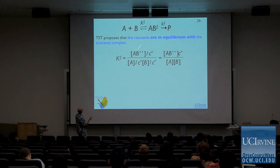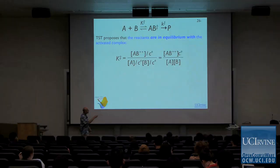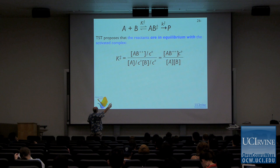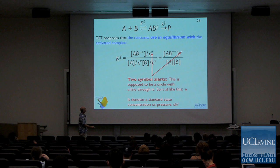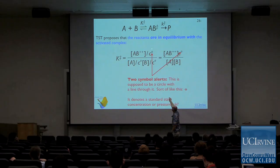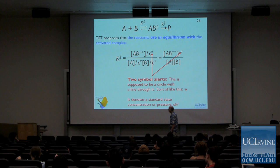With that as a premise, let's see if we can work out what the reaction rate is. Here's our transition state theory mechanism. We can write an expression for the equilibrium constant: product over reactants. Notice I'm being very careful to write activities — the activity of the transition state divided by the activity of A times the activity of B, because I'm dividing by the standard concentration C0. When we cancel the C0 terms, I end up with an extra factor of C0 in the numerator, which ensures the equilibrium constant is dimensionless.